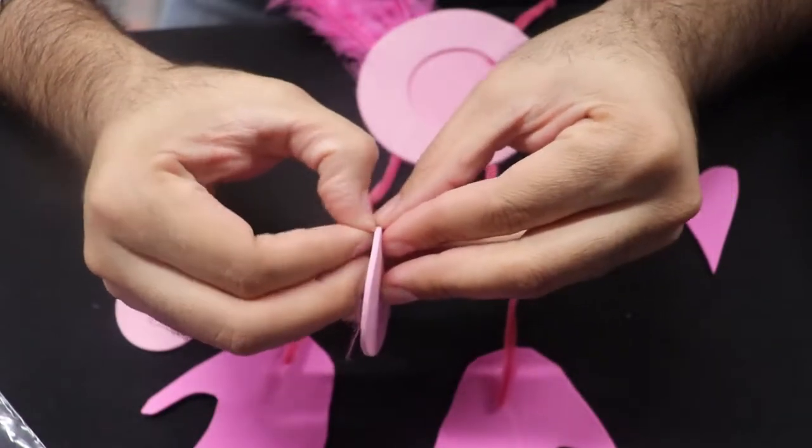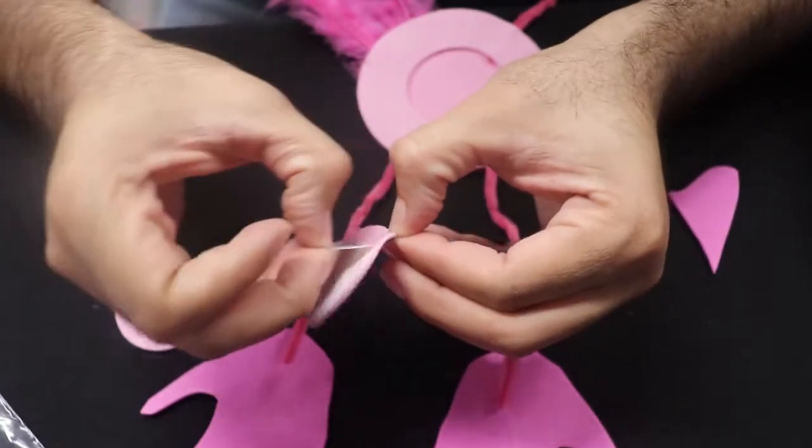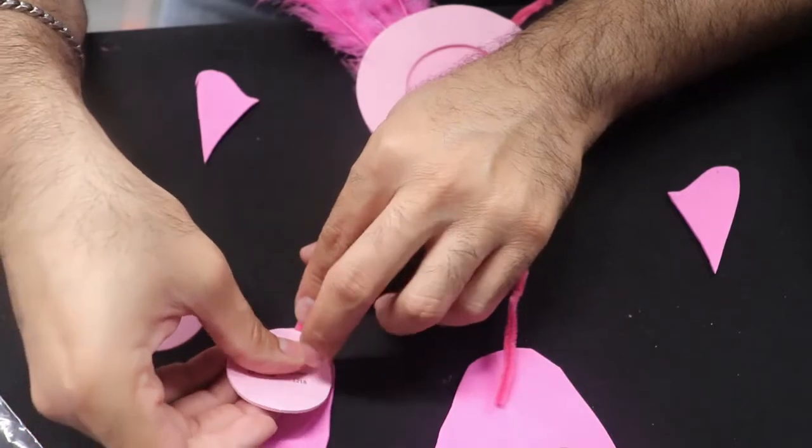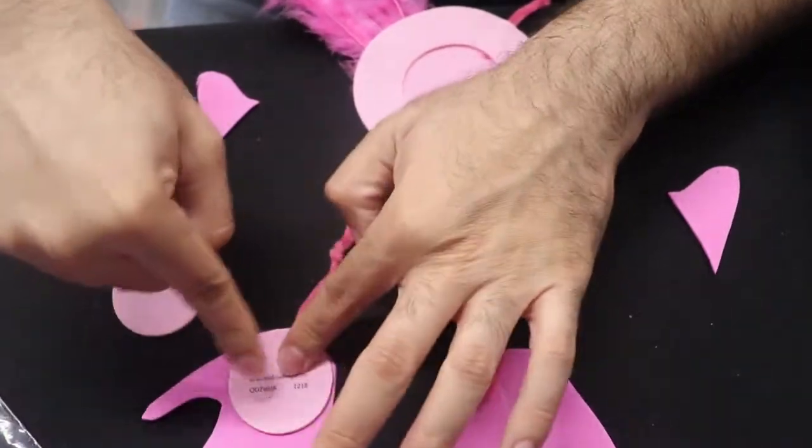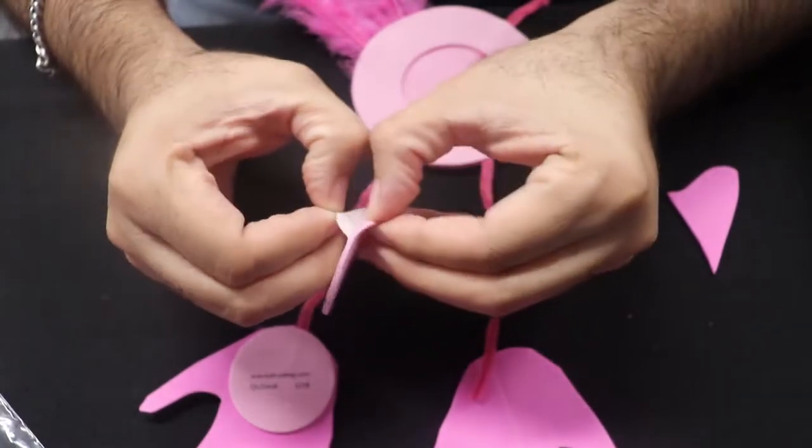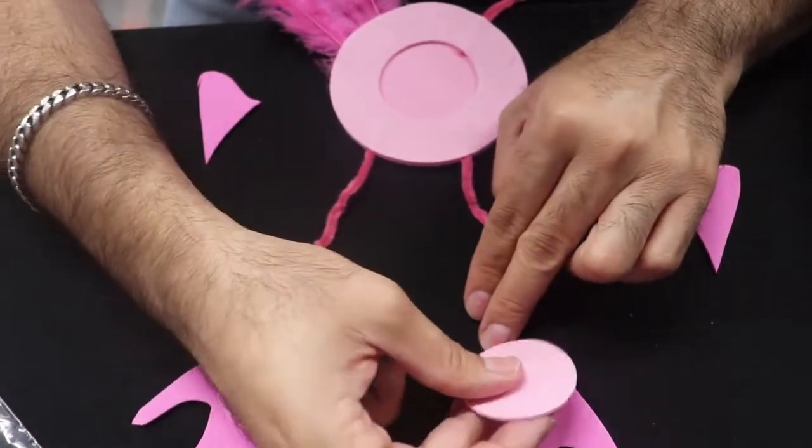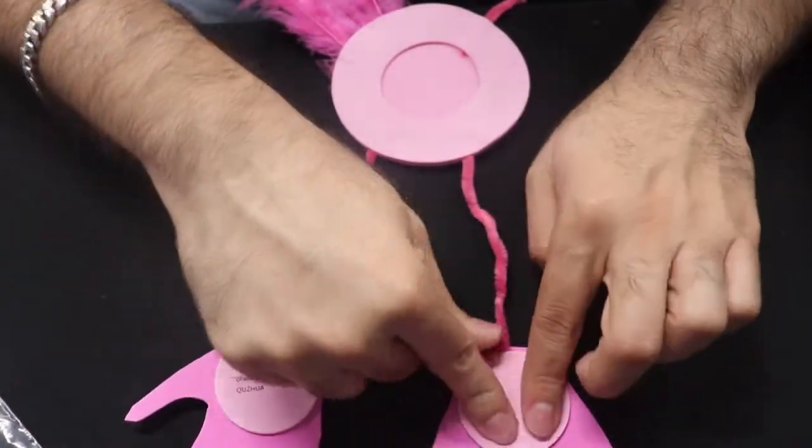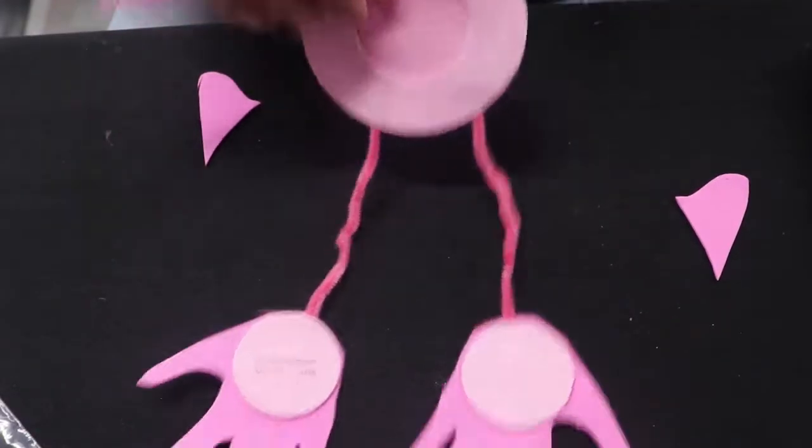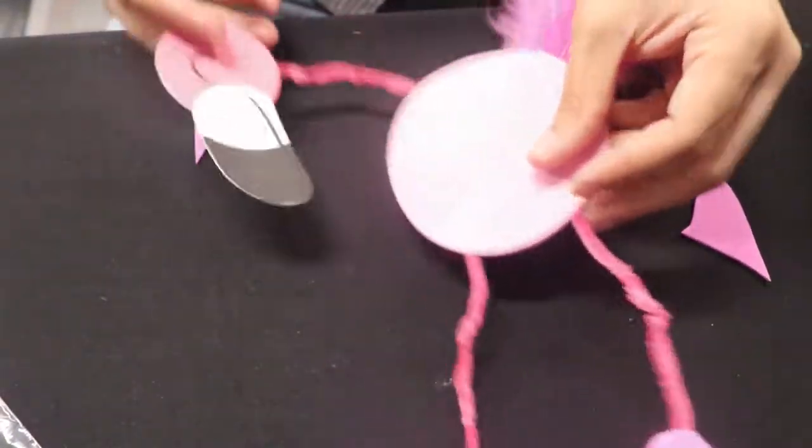Then I'm going to take my circles with the self-adhesive backs. Let's peel off the self-adhesive back. Oh, it's almost harder to do. Apply it to the little handprint. Do the same for the other one. Put that right there. And then my flamingo friend is almost complete.